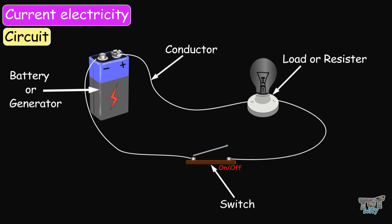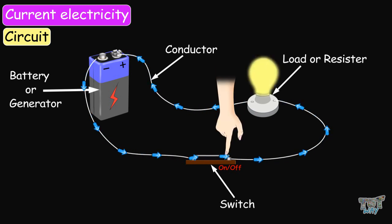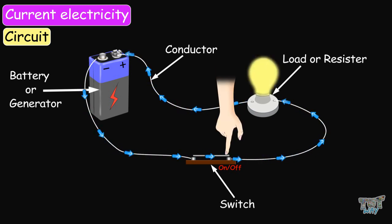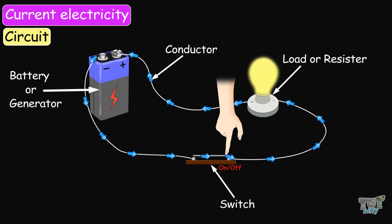The fourth part of a circuit is optional — it is the switch, which is used to control the flow of electrons through the circuit. Using a switch, you can stop or start the flow of electrons. Now we will be learning about the parts of the circuit one by one. First is the source of electricity — it can be a battery or a generator.